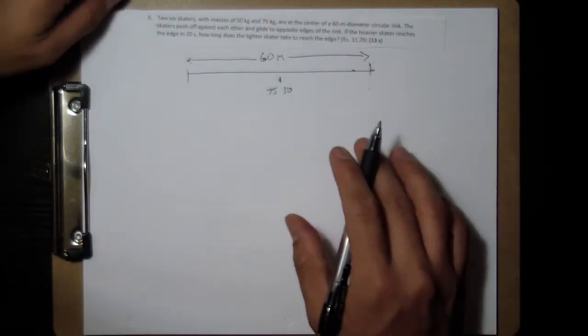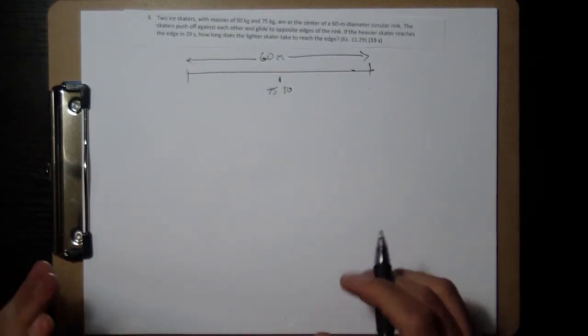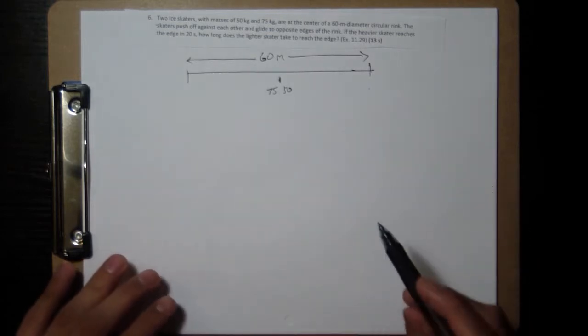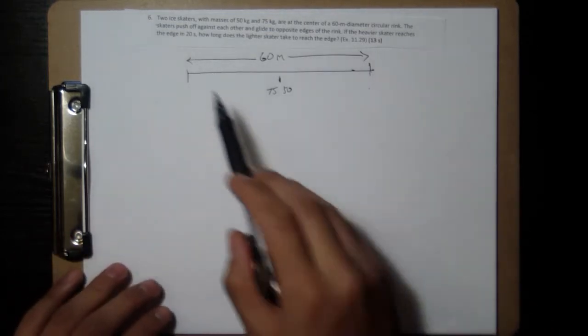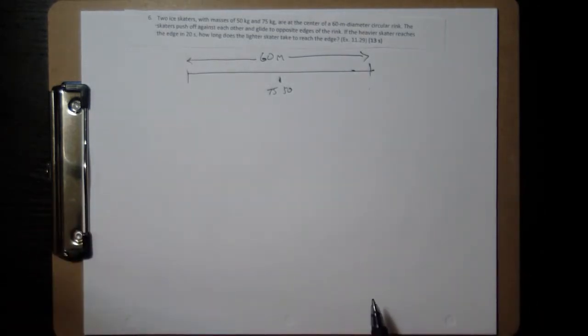So the key to this is using conservation of momentum but also using the kinematic equations that we have. The kinematics isn't too difficult for this one because we have constant acceleration. That's the ice, so you push off and the velocity just stays constant all the way throughout.